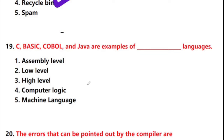Question 19: C, BASIC, COBOL, and Java are examples of which type of language? Options: assembly level, low level, high level, computer logic, machine language. Answer is option 3: high level languages.